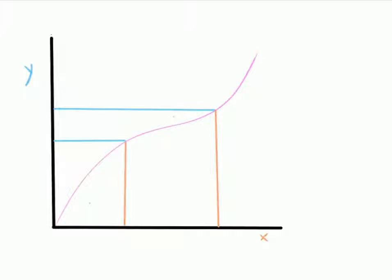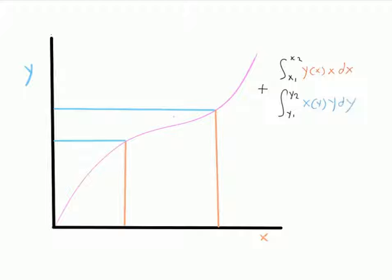Here we have a graph, and pink is a function. What we know is, if x and y are both treated as functions, then this area — the area of this shape — is going to be equal to the integral from x1 to x2 of y(x) times x dx. That's plus the integral from y1 to y2 of x(y) times y dy. This is the area of the blue, and the red is the area of the red region.